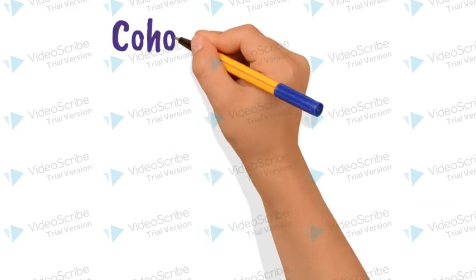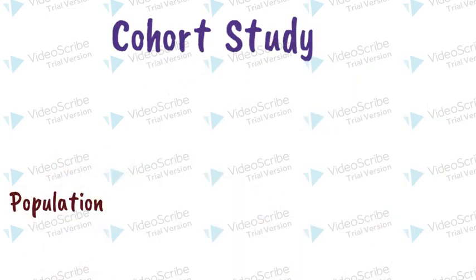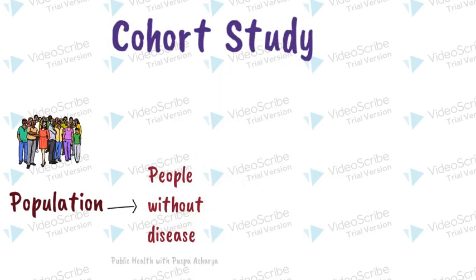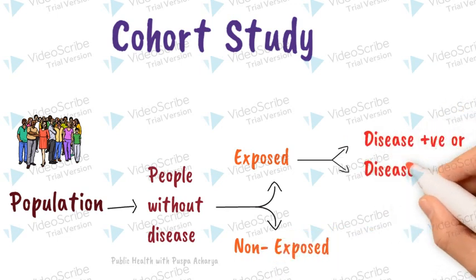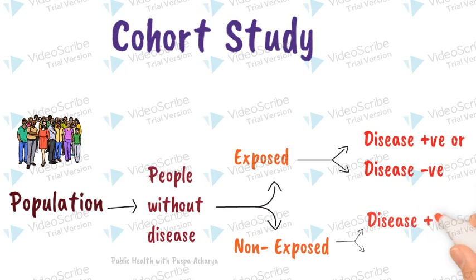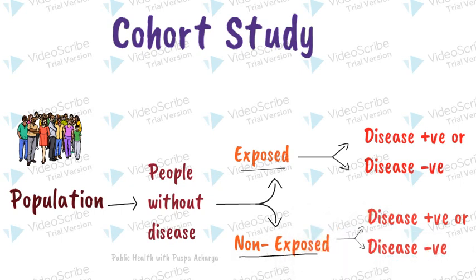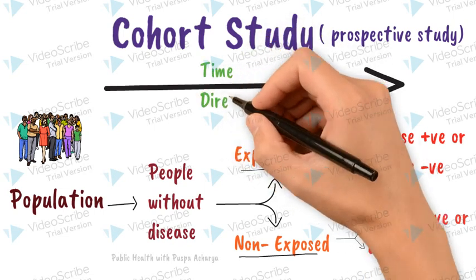Now let's talk about cohort study design. This study begins with a defined population who are free from disease and classified into subgroups according to their exposure status. The whole cohort is then followed up to see how subsequent development of new cases of a particular disease differs between groups with and without exposure. Cohort studies are often called prospective studies, as the investigator looks forward for the outcomes.